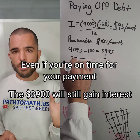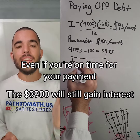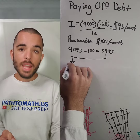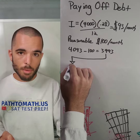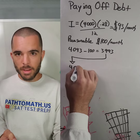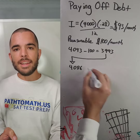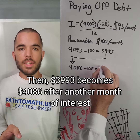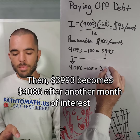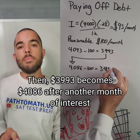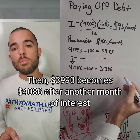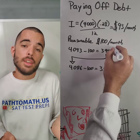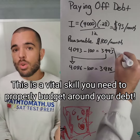You're going to start off with $4,093. If you're late on that $4,000 payment, you're immediately going to be adding $93. That $3,993 then needs to be put into the formula one more time because another month has passed.